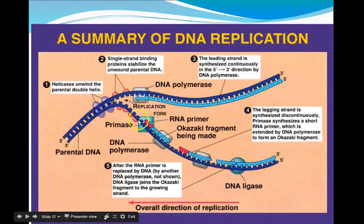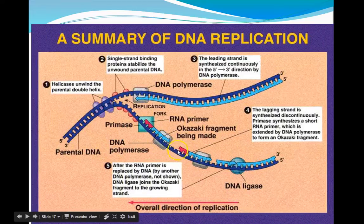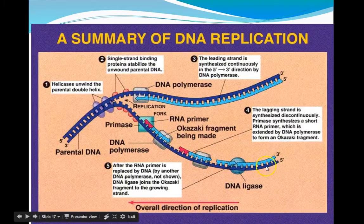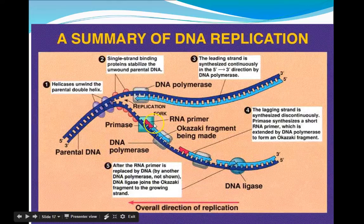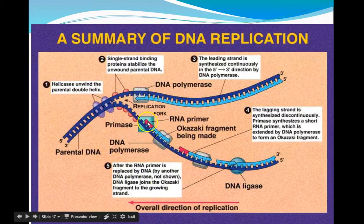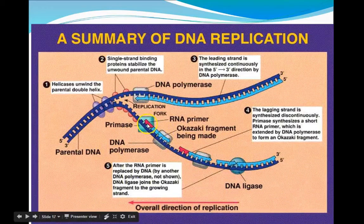However, the opposite strand, which is called the lagging strand, has a 3' end here and a 5' end here. So now what we see is that the DNA polymerase enzyme is going to have to work in small, short fragments. So the way this happens is, first thing, the enzyme primase must lay down an RNA primer. The primer is the location for DNA polymerase to begin.